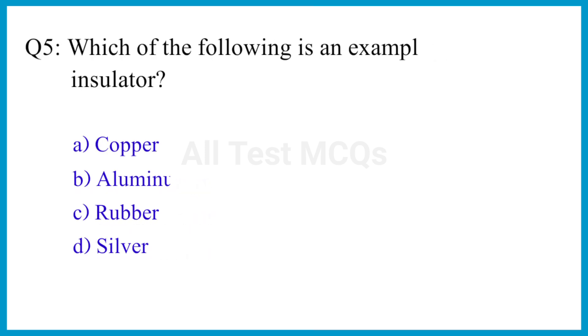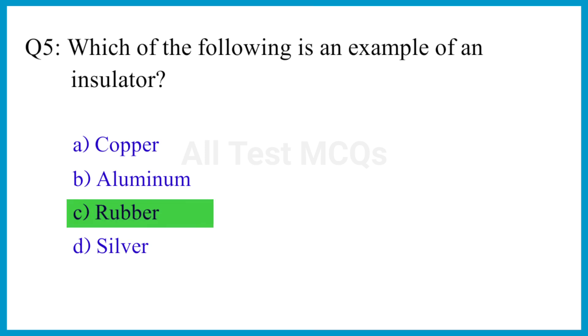Question number 5. Which of the following is an example of an insulator? The correct answer is option C. Rubber.